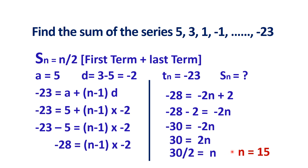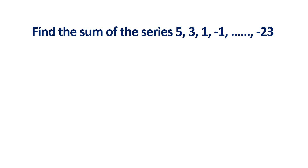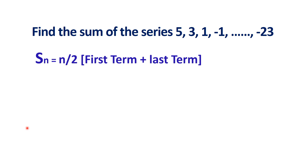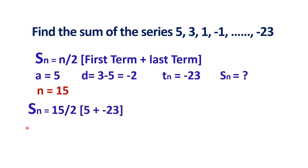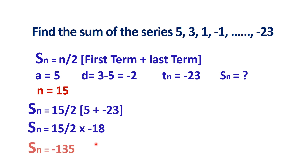Now we apply N equals 15 in the sum formula. Sn equals 15 divided by 2 into first term 5 plus last term minus 23. That is 15 by 2 into minus 18, since 5 plus minus 23 is minus 18. The answer is Sn equals minus 135. So the sum of this series is minus 135.